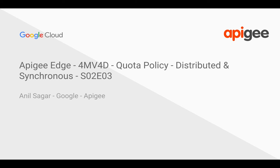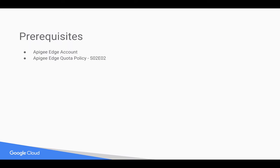Hello everyone, welcome to Apigee 4-minute videos for developers, quota policy API traffic management series. In this video we're going to see how the distributed and synchronous XML elements work in quota policy. I'm Anil Sagar, I work at Google on the Apigee platform. Prerequisites for this video: you need an Apigee Edge account, you can register at apigee.com/edge.